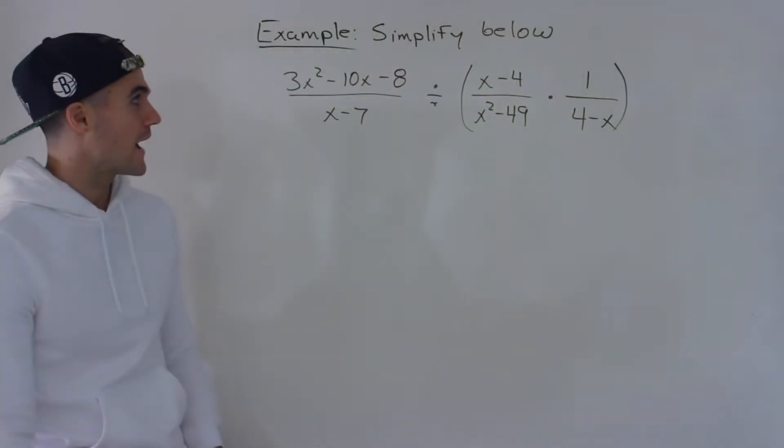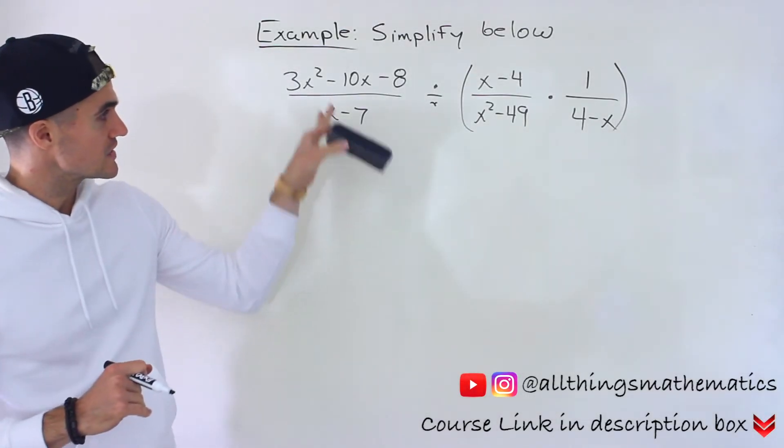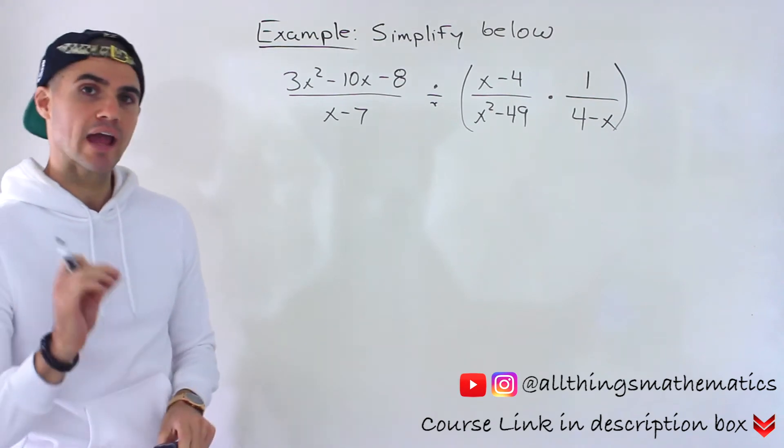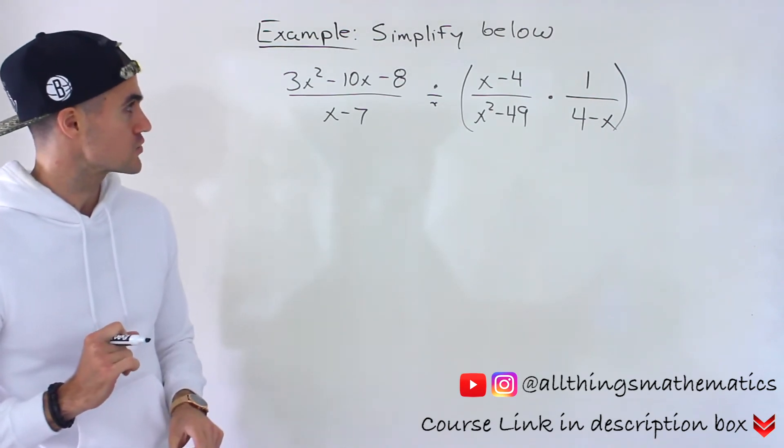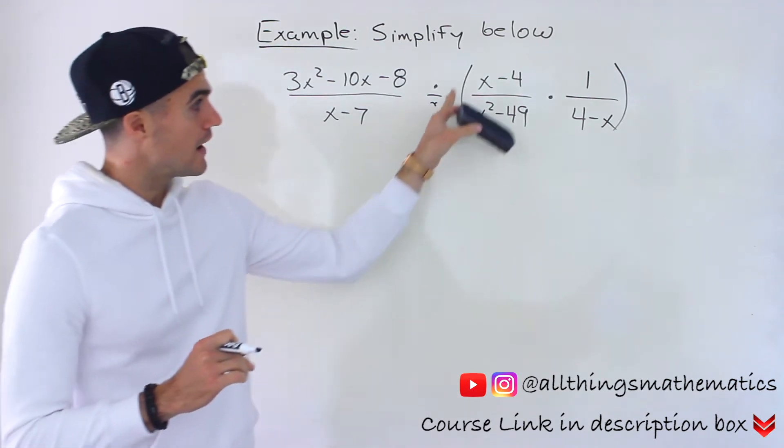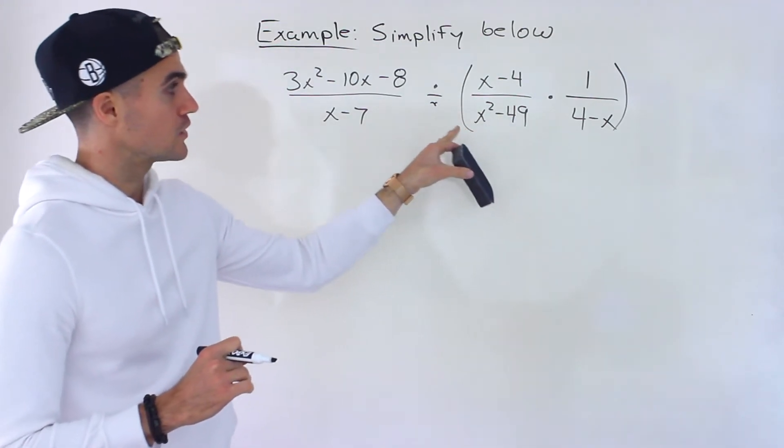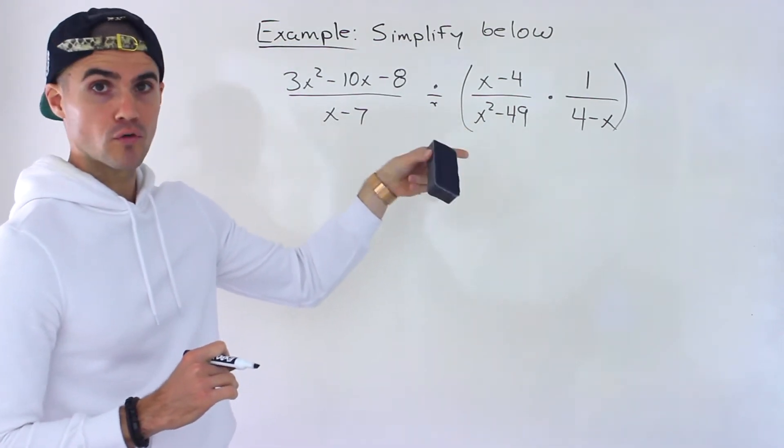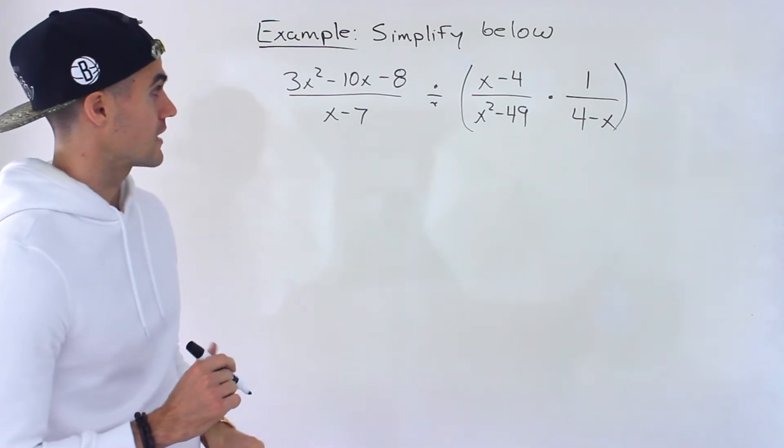What's up everyone? Patrick here. Welcome back and in this next question we have to take this expression here and we have to simplify. So we've got 3x squared minus 10x minus 8 divided by x minus 7 divided by x minus 4 over x squared minus 49 times 1 over 4 minus x.